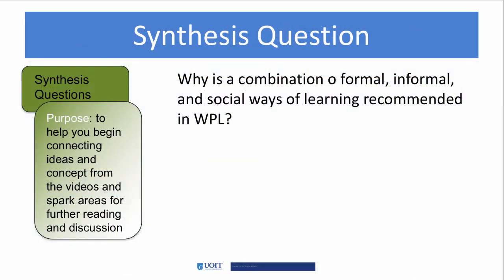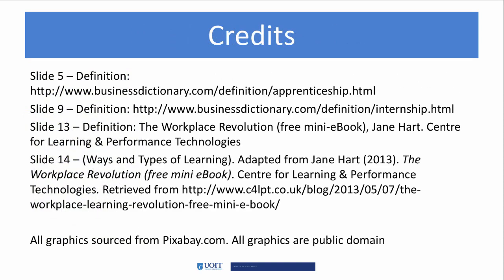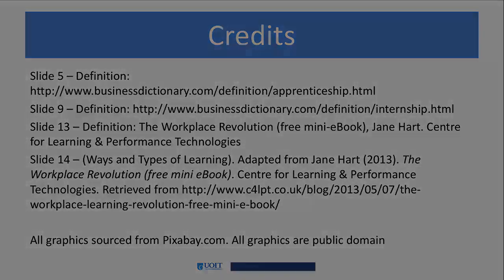There is only one synthesis question for this video: why is a combination of formal, informal, and social ways of learning recommended for workplace learning? I hope this video helps you understand the various types and characteristics of workplace learners. But workplace learning will continue to evolve along with technology. In the future, there will be even more opportunities for learners to gain and share knowledge. See you in the next video!